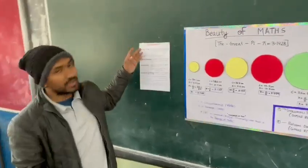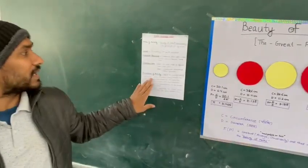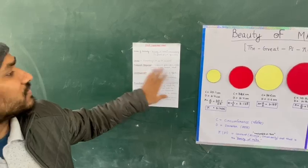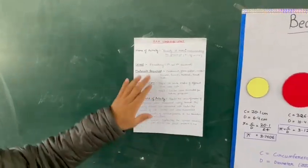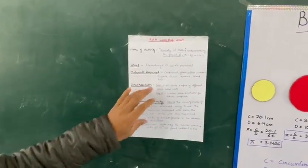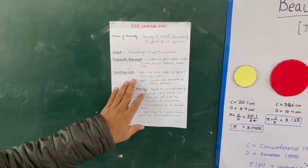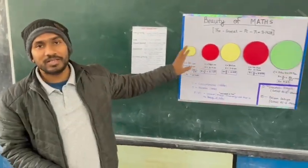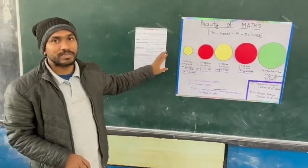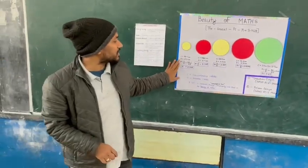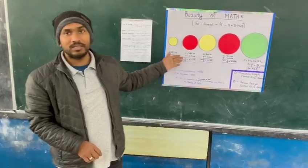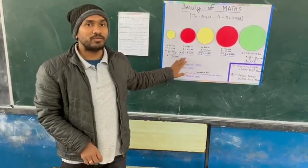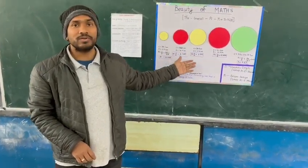Here is a brief write-up about the activity. The materials required were cardboard, scissors, fabric, and a scale. We constructed these circles and decorated them for aesthetic purposes. Then we took the ratios of all the circumferences to the diameter, and we found that, if we neglect human error, the ratios are found to be constant.